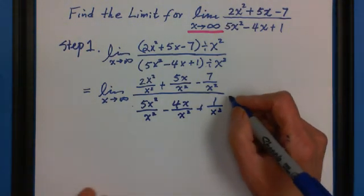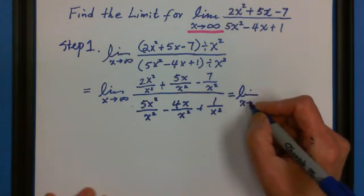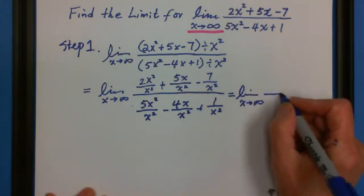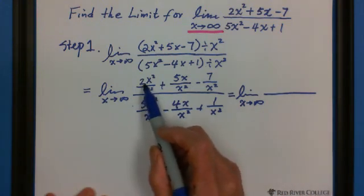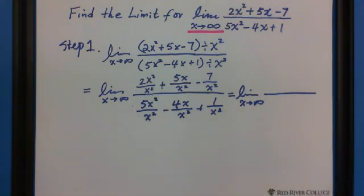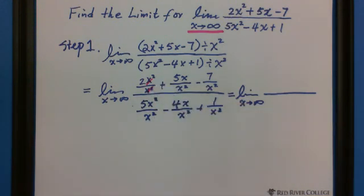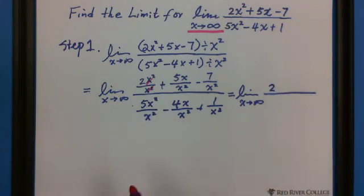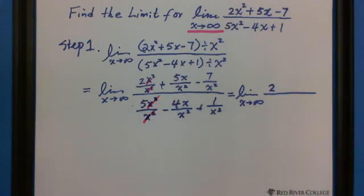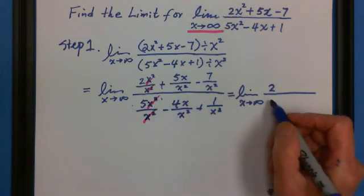Then we got limit x approaches to infinity. We have 2x squared divided by x squared. We can cancel the x squared with x squared, so we got 2. Same thing on the bottom. x squared divided by x squared cancel, so we got 5.